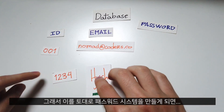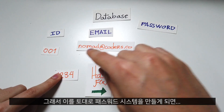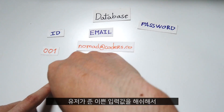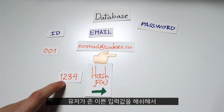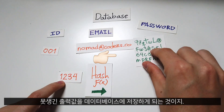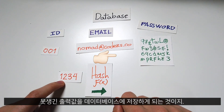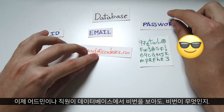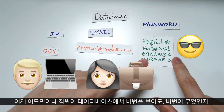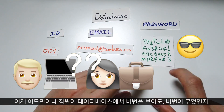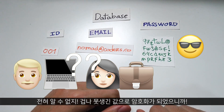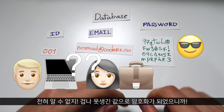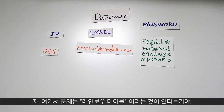So next time you create a user account, what you can do is hash the password that the user gives you and save that hashed value on the database. Now if somebody reads your database, they won't be able to see what the password is because it's just incredibly random and ugly.